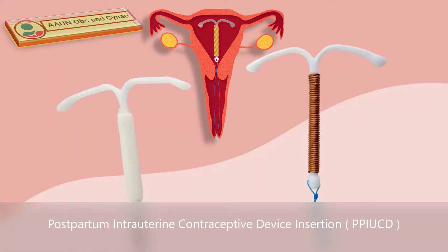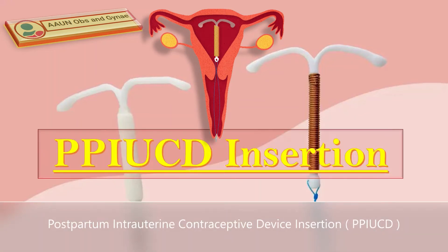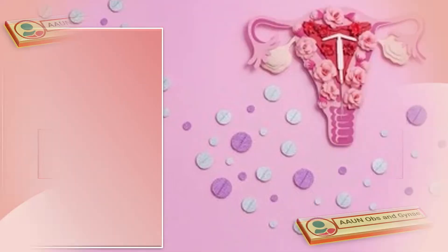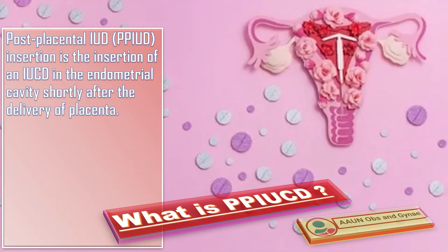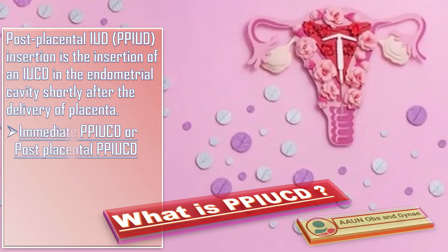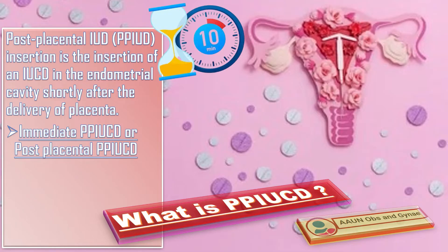Today we will talk about PP-IUCD insertion. Post-placental IUCD insertion is the insertion of an intrauterine device in the endometrial cavity shortly after the delivery of placenta. It is termed as immediate when inserted within 10 minutes of delivery of placenta.